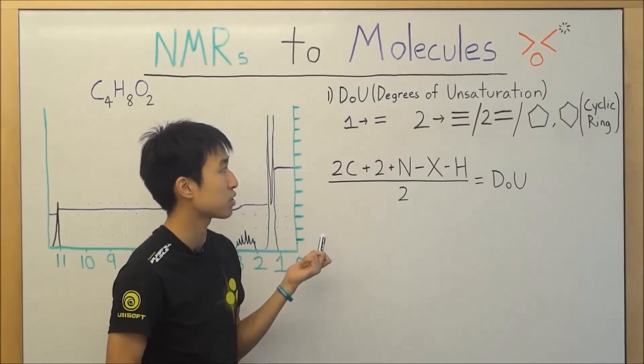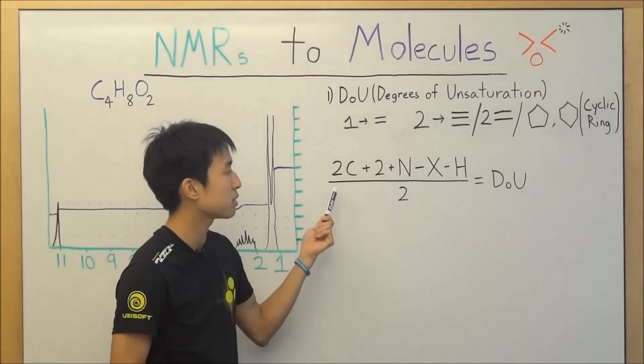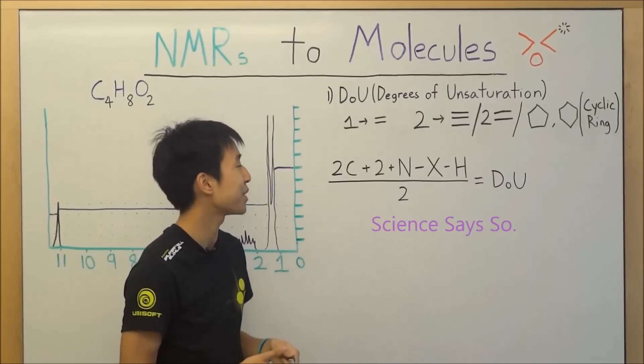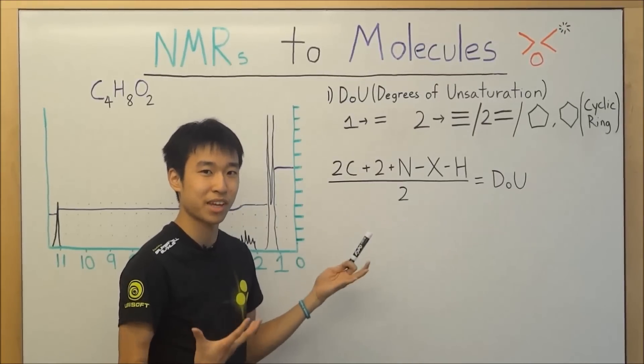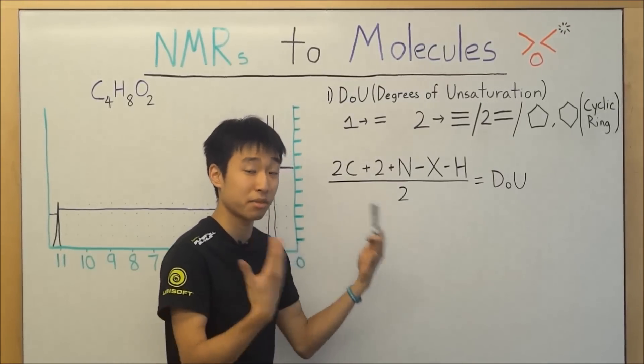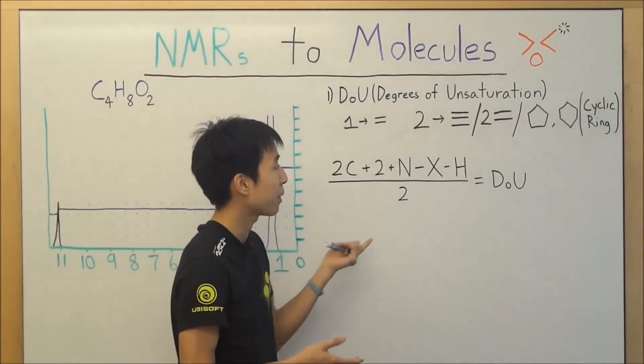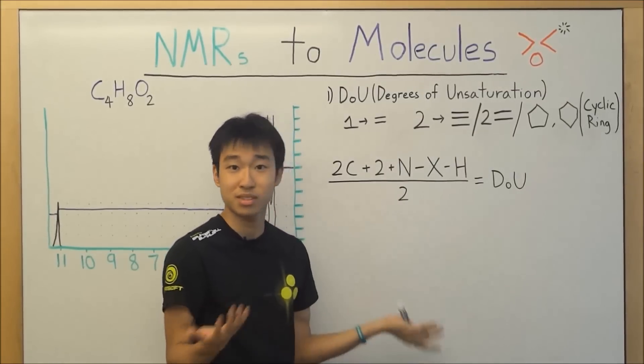So the equation for degrees of unsaturation is two times the number of carbons in your molecule plus two, I don't know why, but plus N which is the number of nitrogens minus X the number of halides which are basically fluorine, chlorine, bromine, iodine, minus number of hydrogens divided by two. Nice and simple.